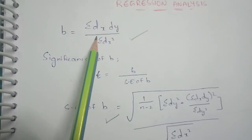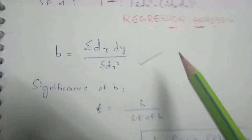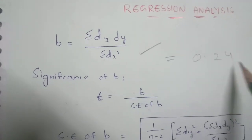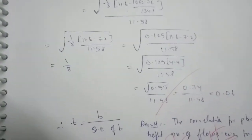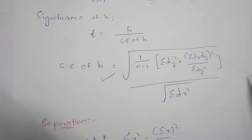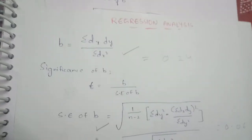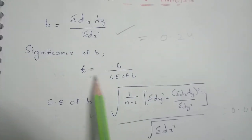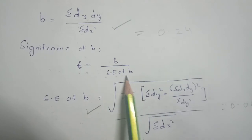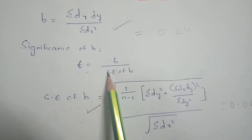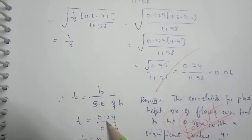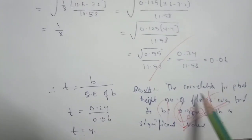Now substitute both values into T equals B divided by significance of B: 0.24 divided by 0.06. Therefore T equals 4. The regression coefficient is 0.24, the significance of B is 0.06, and the final T value is 4.